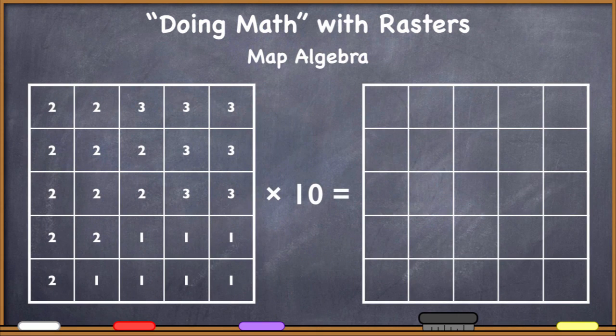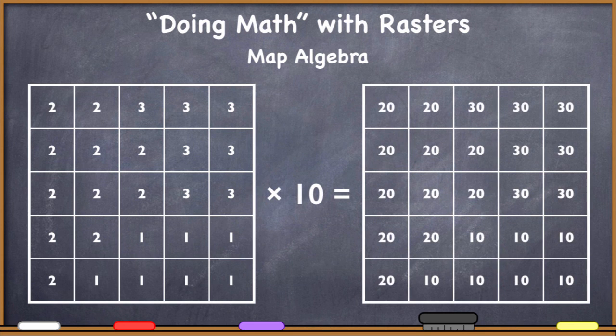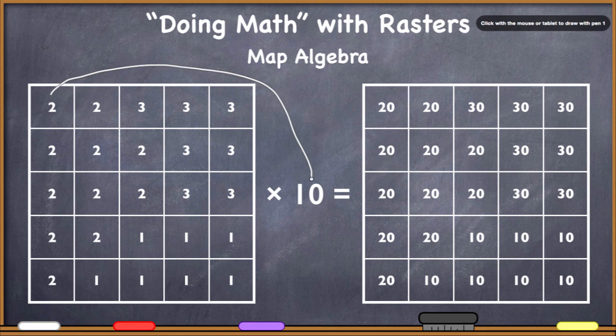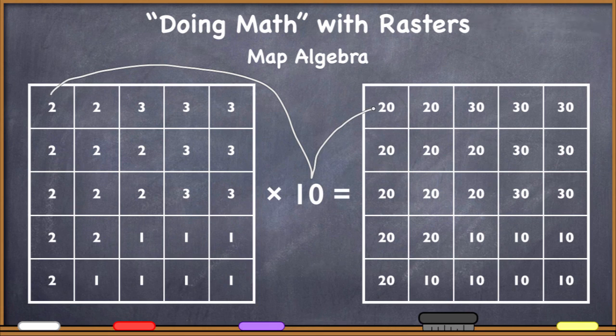Well, in this case, you can multiply an entire raster by some number. This is a really easy example. I'm multiplying the raster by 10. And so what happens is the computer will take every cell and then come down here and multiply it by 10 and then put that value in the new cell.